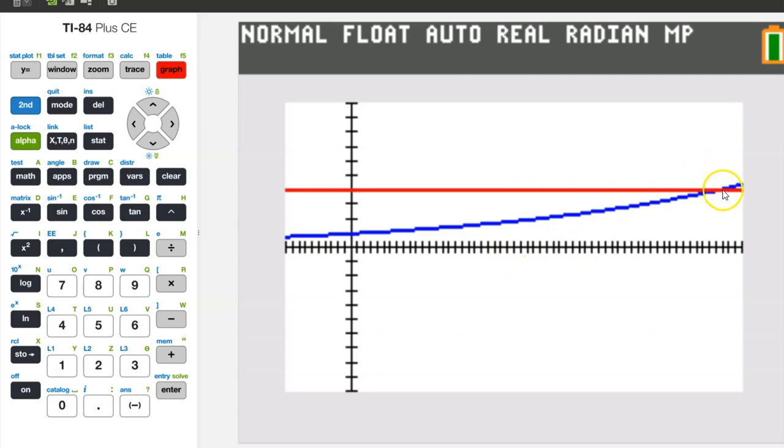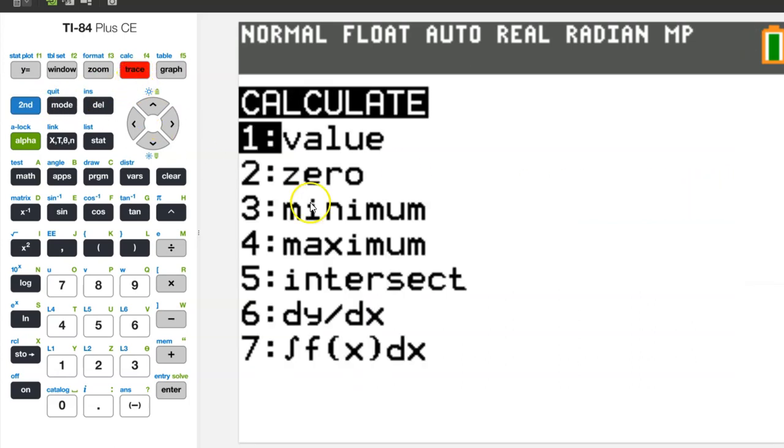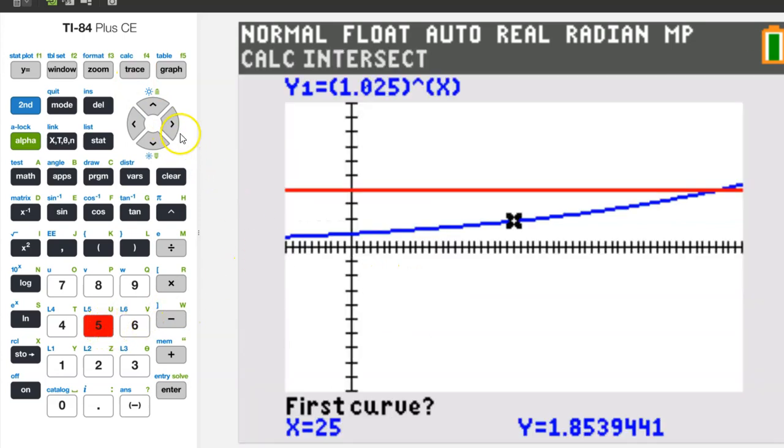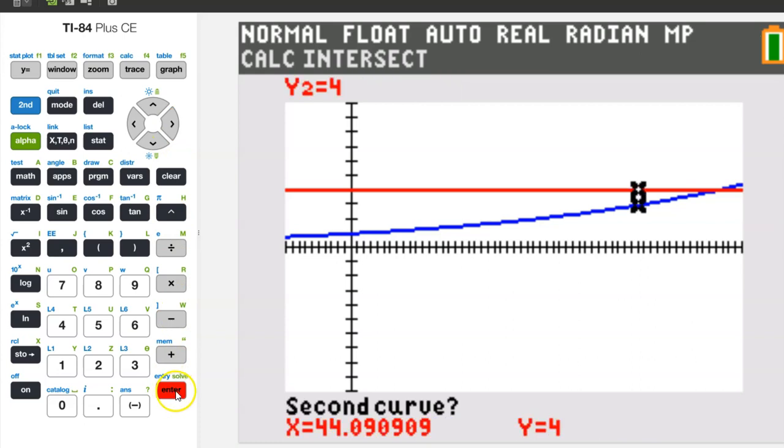We can see the intersection point right there. So let's go ahead and hit second, trace, and choose 5 for intersect. Move the pointer close to the point of intersection. And hit enter three times. So there it is.